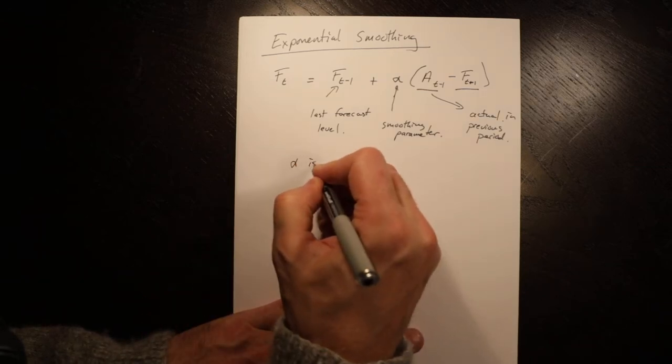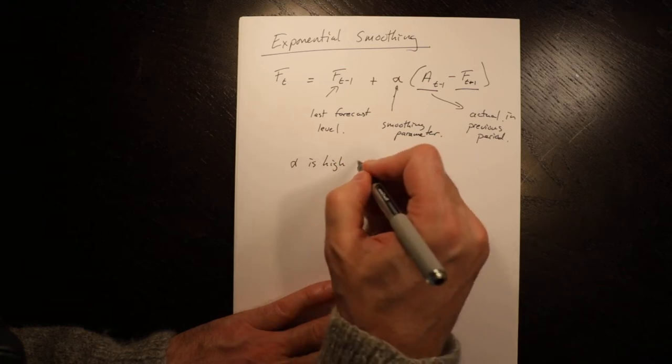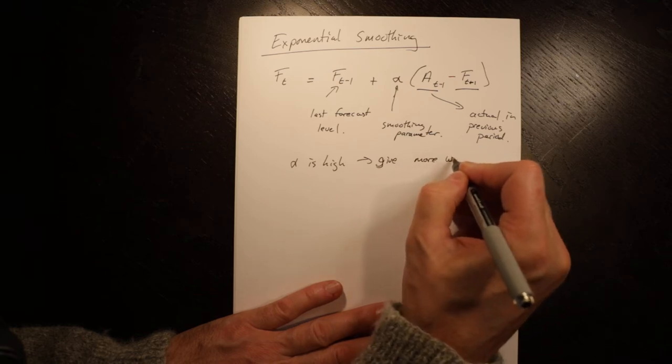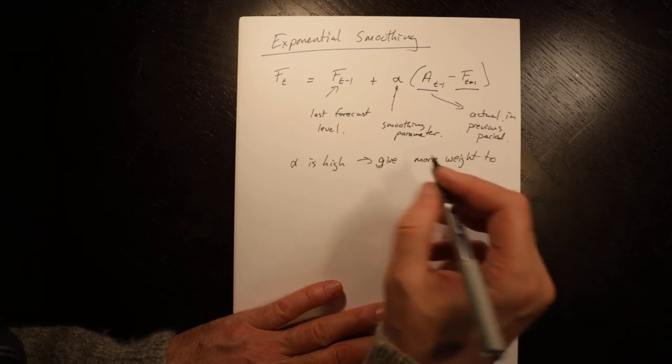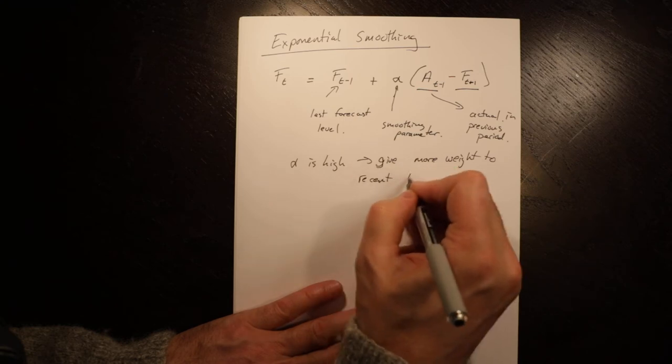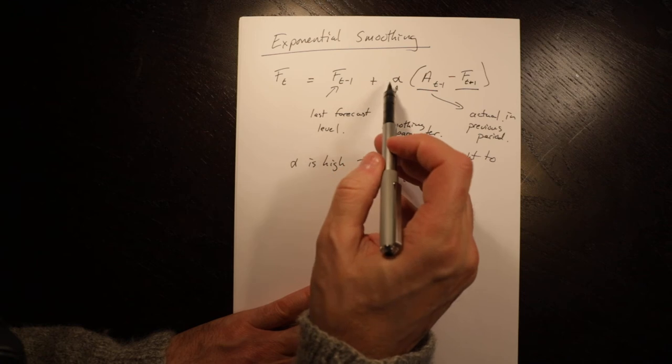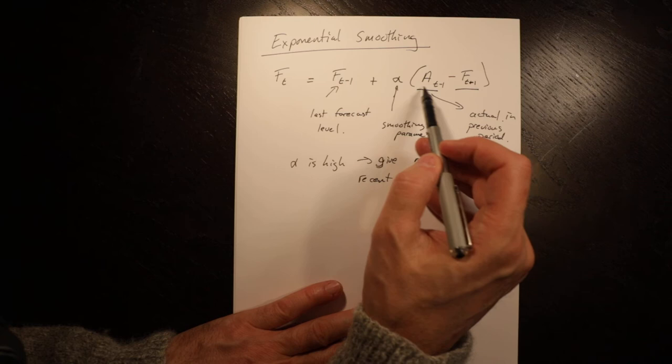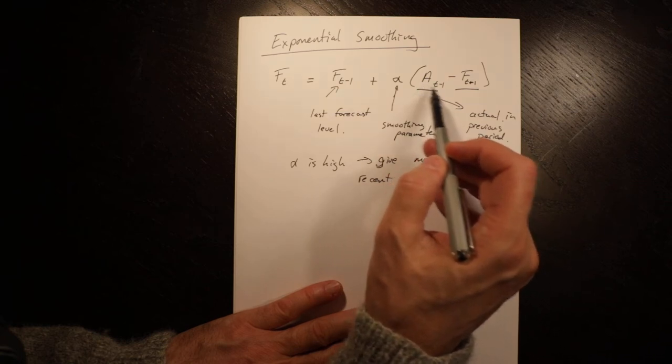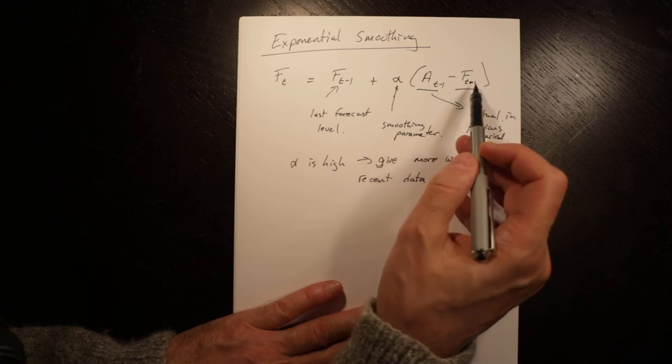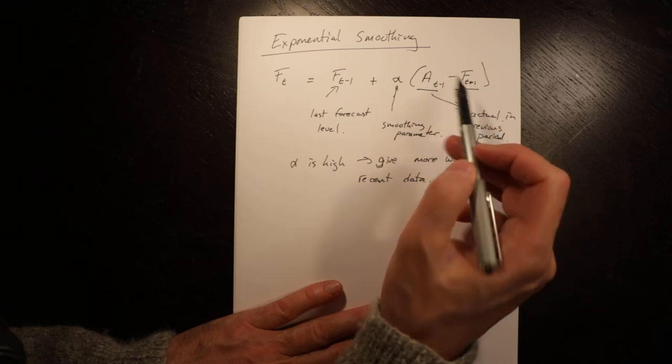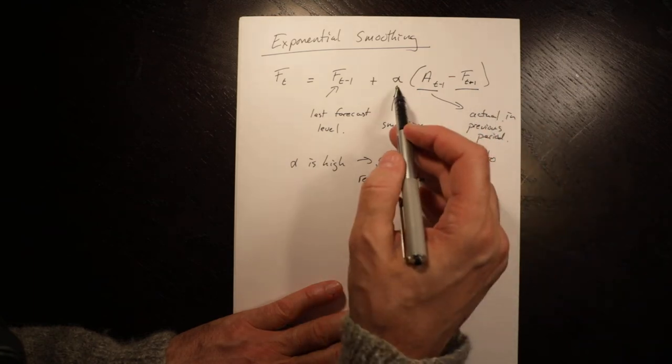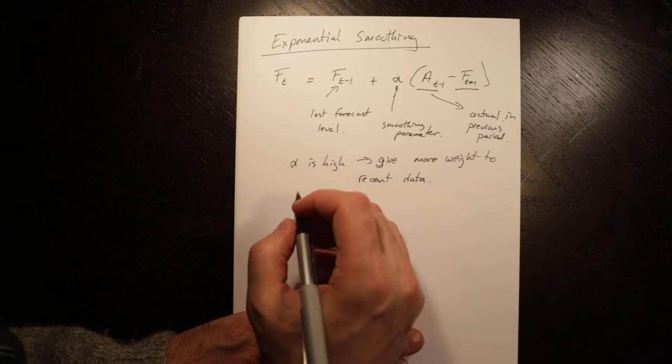If alpha is high, you give more weight to recent data. So if this is high, then you adjust to reflect that actual, and you give more weight to the more recent sales, and the forecast is an average of many previous sales. So the bigger alpha is, the more weight you give to recent data.